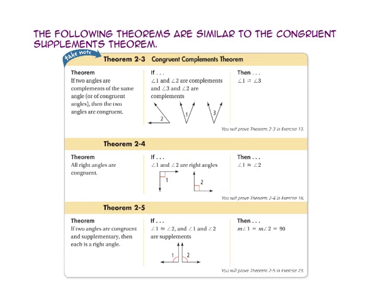These three theorems are very similar to the congruent supplements theorem. The congruent complements theorem states: if two angles are complements of the same angle, or of congruent angles, then the two angles are congruent. So if angle 1 and angle 2 are complements, and angle 3 and angle 2 are complements, then angle 1 is congruent to angle 3. Theorem 2-4: all right angles are congruent — so if angle 1 and angle 2 are both right angles, then angle 1 is congruent to angle 2. Theorem 2-5: if two angles are congruent and supplementary, then each angle is a right angle. So if angle 1 is congruent to angle 2 and angle 1 and angle 2 are supplements, the measure of angle 1 and the measure of angle 2 will each equal 90.